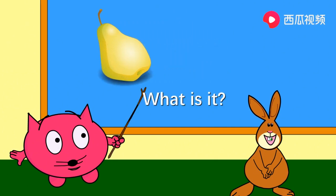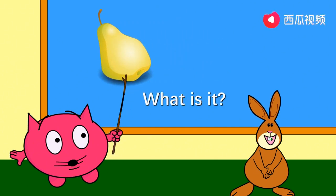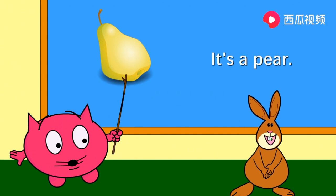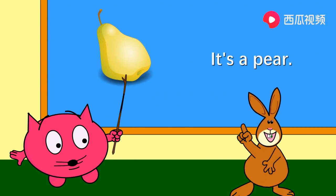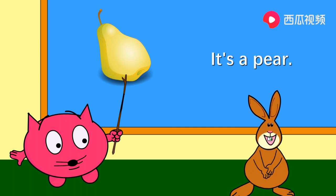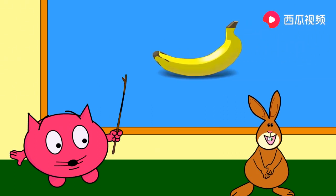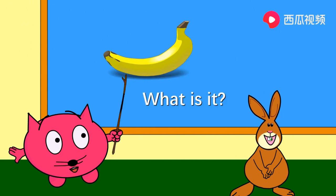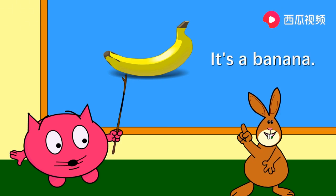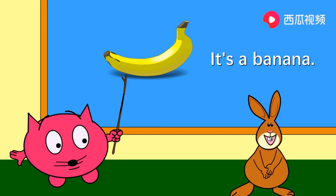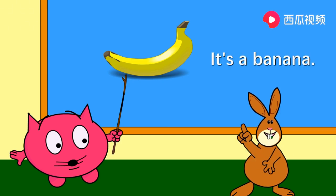What is it? 它是什么? It's a pear. 它是一个梨。 It's a banana. 它是一个香蕉。